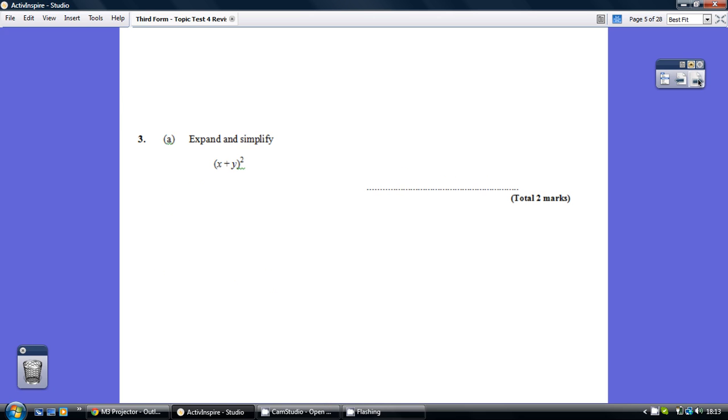Question 3. So fairly straightforward, just remember that x plus y all squared just means x plus y times x plus y, so we've got a pair of brackets to multiply out.